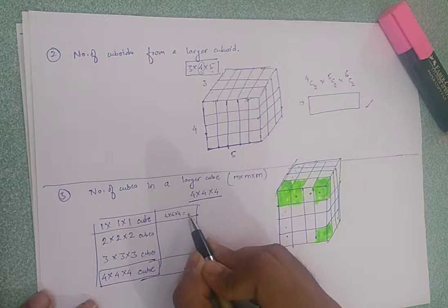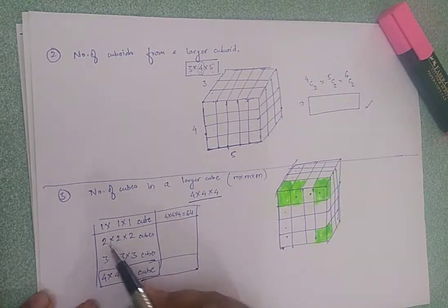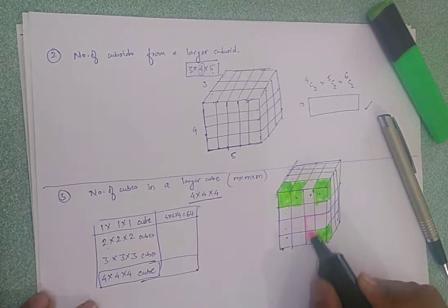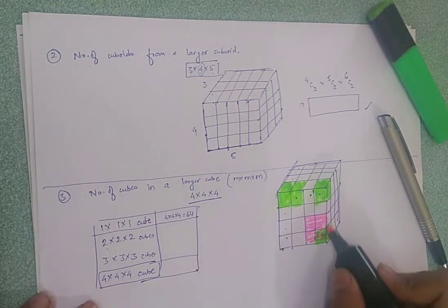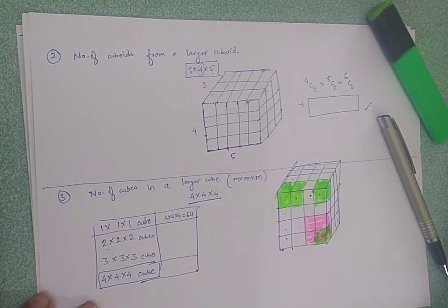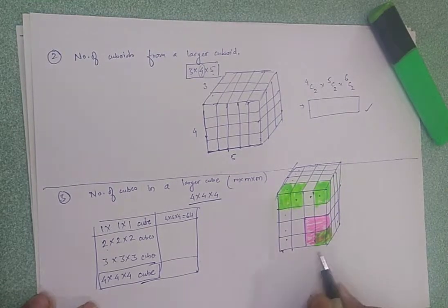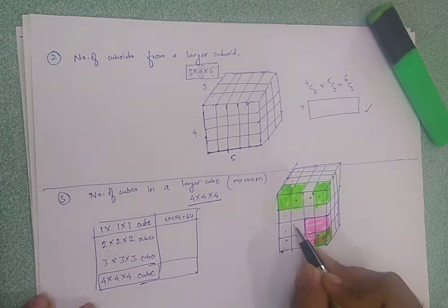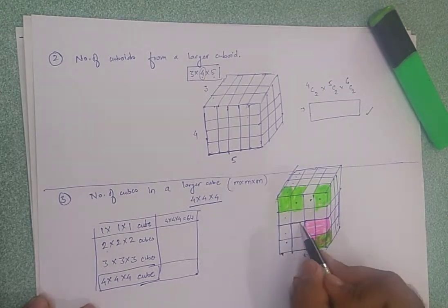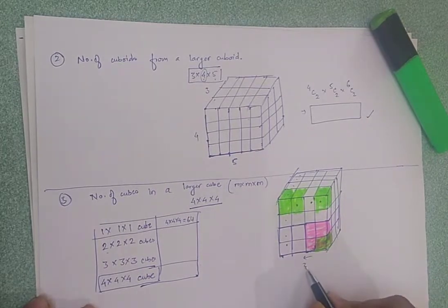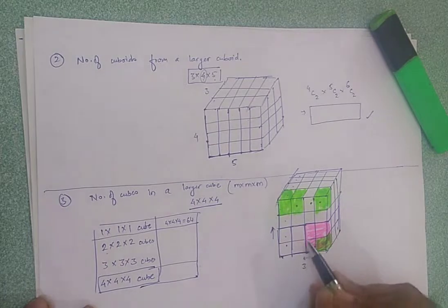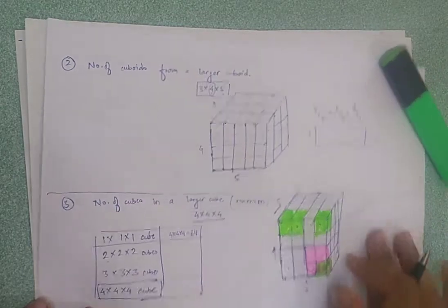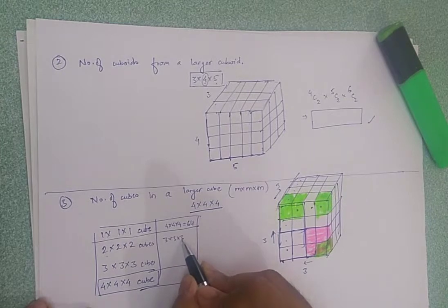Now for the 2×2×2 cubes: we slide this 2-unit cube along the rows and columns. Moving along one axis gives 3 positions; similarly for the other two axes. So the total number of 2×2×2 cubes is 3 × 3 × 3, which gives 27.